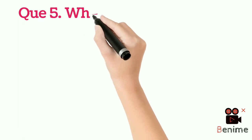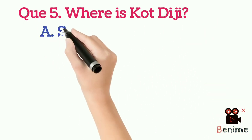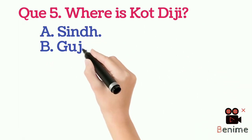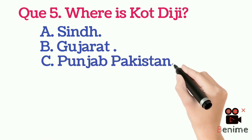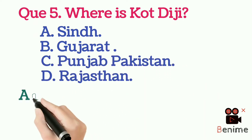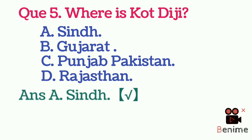Question 5: Where is Kot Diji? A. Sindh. B. Gujarat. C. Punjab, Pakistan. D. Rajasthan. Answer A: Sindh.